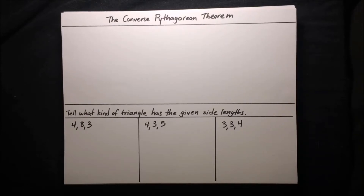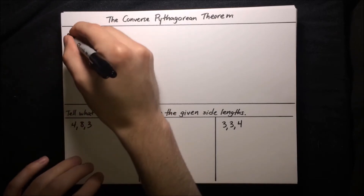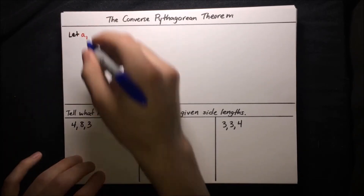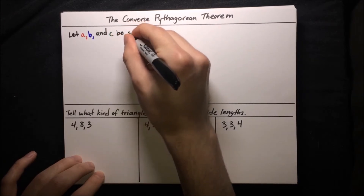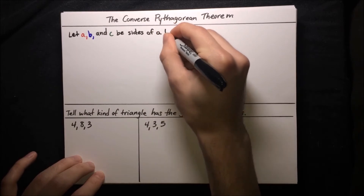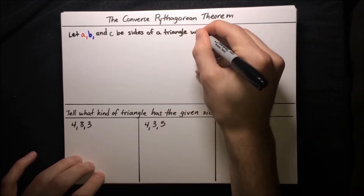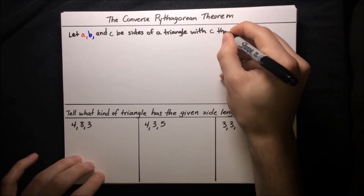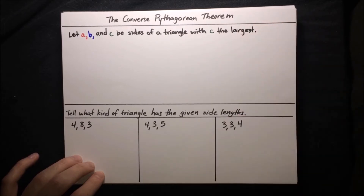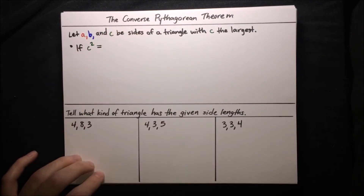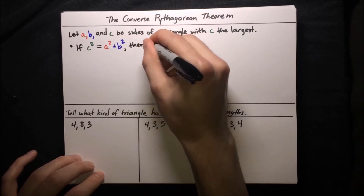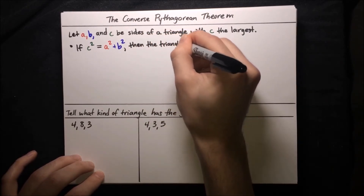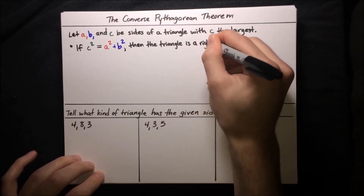In this video we're going to talk about the Converse Pythagorean Theorem. It starts off like this: let A, B, and C be the sides of a triangle, with C the largest. If C squared is equal to A squared plus B squared, then the triangle is a right triangle.